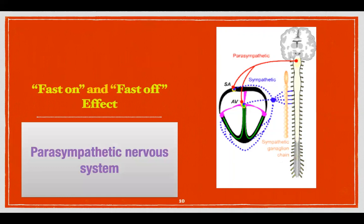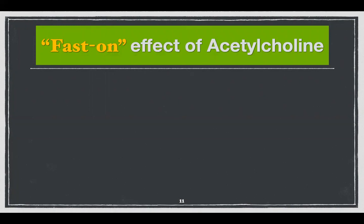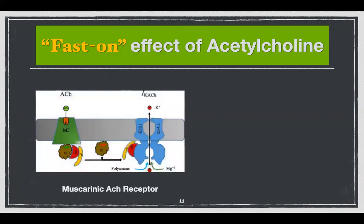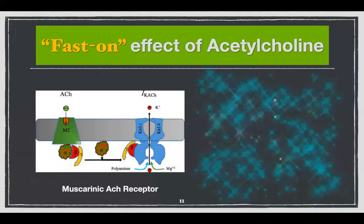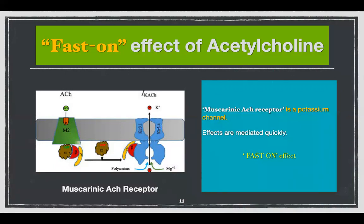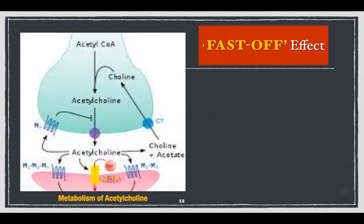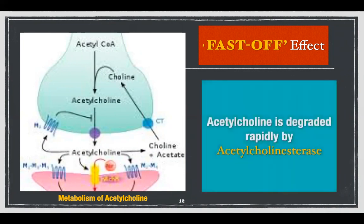The parasympathetic nervous system has a fast on and a fast off effect, meaning the effect is rapid in onset but also terminated very rapidly. Why is the effect fast on? Because it is mediated by the muscarinic receptor M2. This receptor is coupled to a G protein, which then activates an ionotropic receptor — a potassium IKACh channel — so the effects are mediated very quickly. It has a fast off effect because there is a large amount of the enzyme acetylcholinesterase in the synaptic cleft, which degrades acetylcholine very rapidly. So the effect begins quickly and is also terminated quickly.